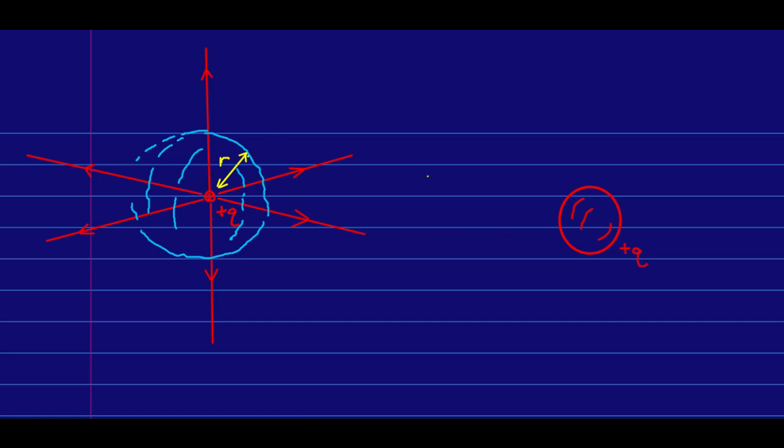then the flux is going to be determined by the enclosed charge plus q. But the other thing to note is that by the symmetry, by the rotational symmetry, by the reflection symmetry, we know that the E field magnitude has to be exactly the same everywhere on the surface of this sphere.